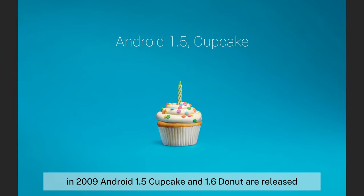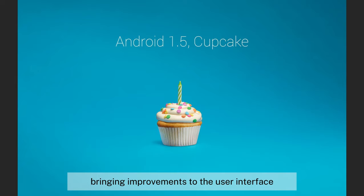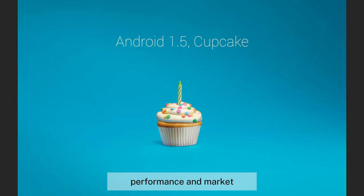In 2009, Android 1.5 (Cupcake) and 1.6 (Donut) were released, bringing improvements to the user interface, performance, and market.